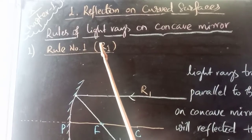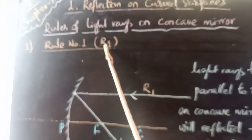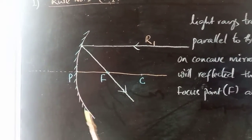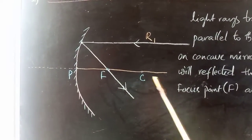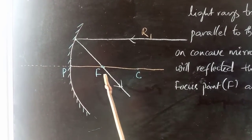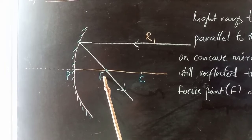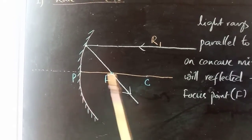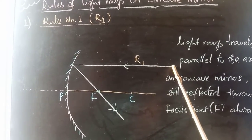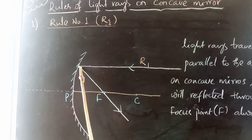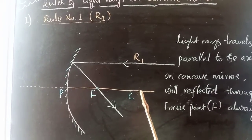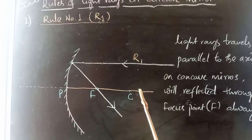Observe this concave mirror. This is the principal axis. You already know this is the pole and this is the center of curvature. F is the focus point, in the middle of P and C. Here is Rule Number One: when an incident ray travels parallel to the principal axis...